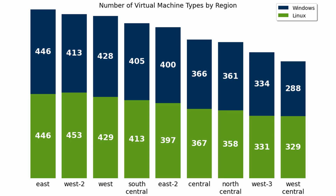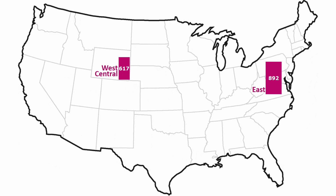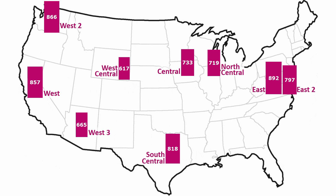There are currently nine public Azure regions in the US, and the amount of VM types available in each region varies — from a high of 892 in the East region to a low of 617 in the West Central region. Let's see what this looks like on a map. The East region in Virginia has 275 more VM options than the West Central region in Wyoming. Here are the amounts of Linux and Windows VM options in the other US regions. Also, Microsoft is in the process of building a new region in Georgia.